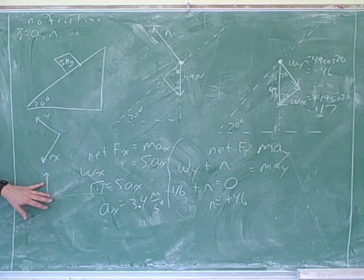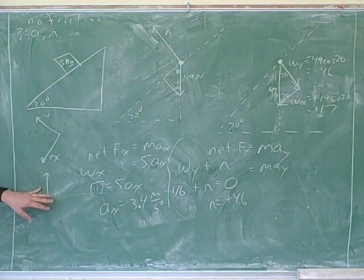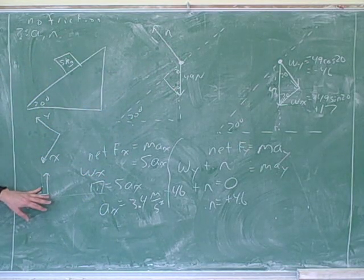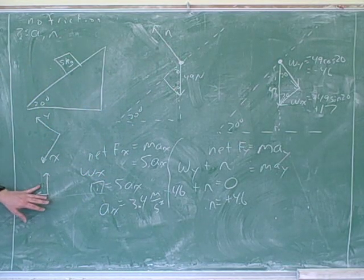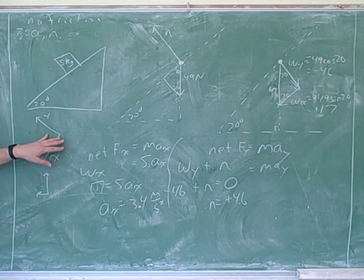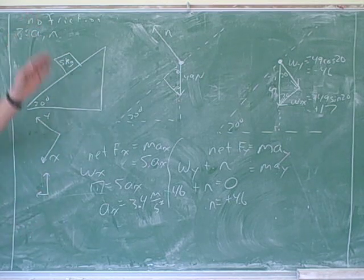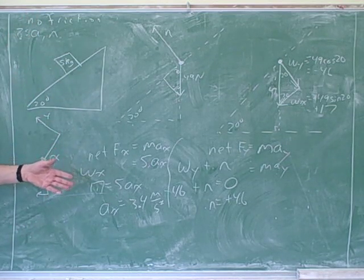Because if we chose horizontal and vertical, then we would have to break both the normal force and the acceleration into components. Because the normal force and the acceleration are not parallel to these. Whereas with these axes, we only had to break one thing into components. You want to pick axes that are parallel or anti-parallel to as many vectors as possible so you don't have to break things into components.